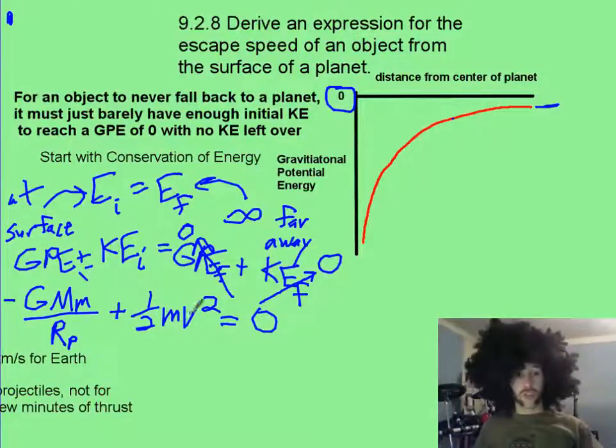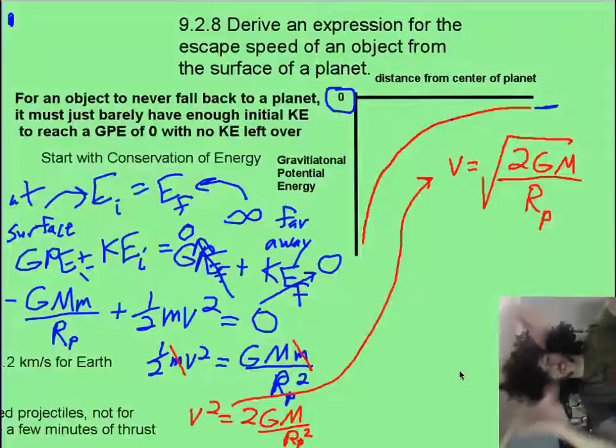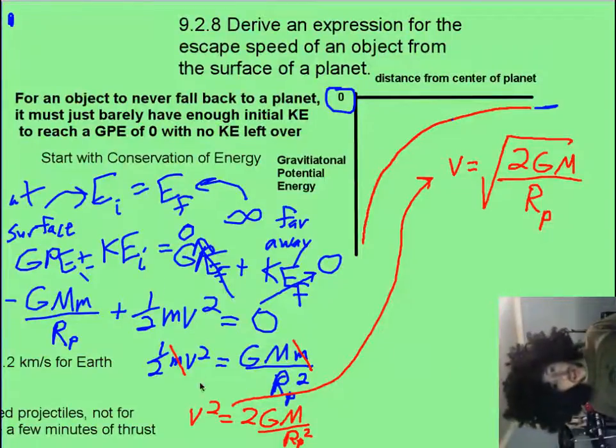plus your normal one-half mv squared equals zero. Now you just solve for velocity. Presto! I skipped ahead,